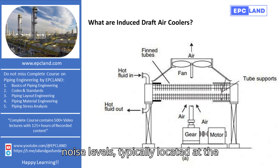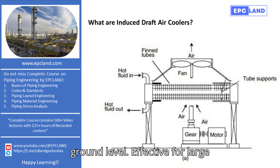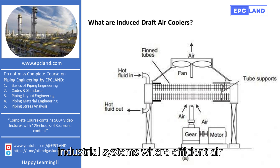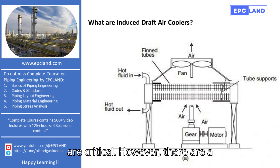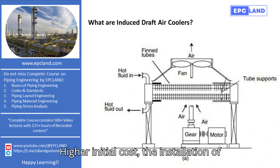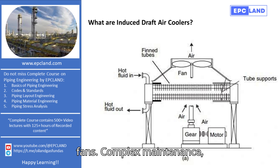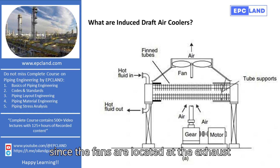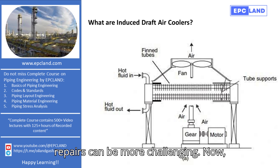Lower noise levels — typically located at the exhaust end of the system, induced draft fans tend to be quieter, especially at ground level. Effective for large systems — these fans are ideal for large industrial systems where efficient air movement and precise temperature control are critical. However, disadvantages include higher initial cost, as installation can be more expensive due to robust ducting and strategic fan placement. Complex maintenance — since the fans are located at the exhaust end or higher points, accessing them for maintenance and repairs can be more challenging.